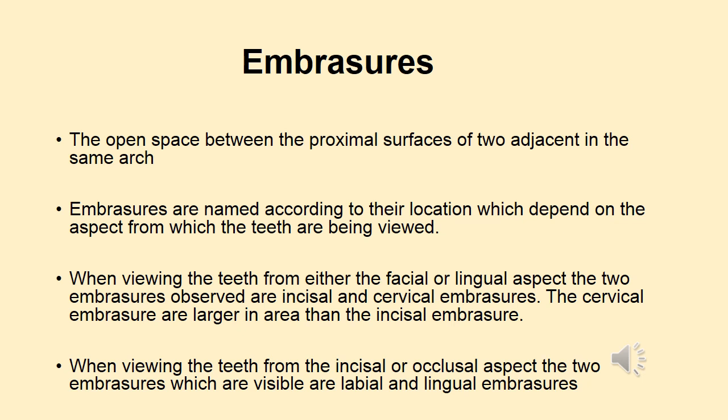For example, if the teeth are being viewed from either the facial or lingual aspect, two embrasures are going to be observed. These two embrasures are named as incisal and cervical embrasures. As compared to incisal embrasures, cervical embrasures are larger in size. When teeth are being viewed from the incisal or occlusal aspect, the two embrasures visible are known as labial and lingual embrasures.